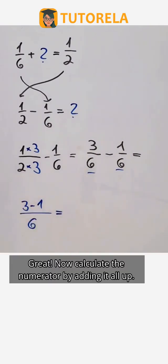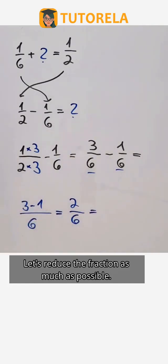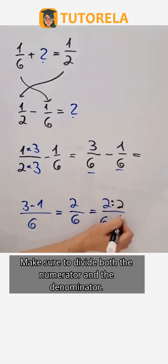Great, now calculate the numerator by adding it all up. Let's reduce the fraction as much as possible. Make sure to divide both the numerator and the denominator.